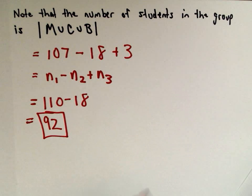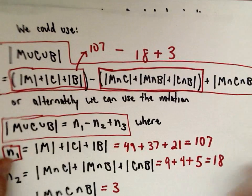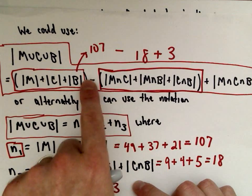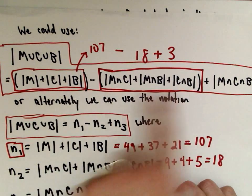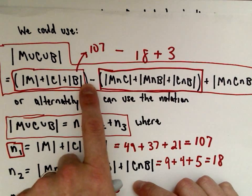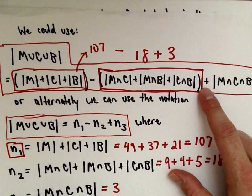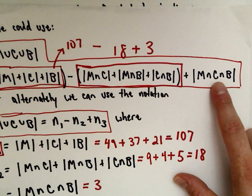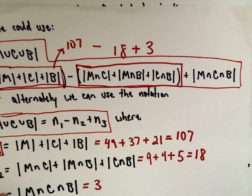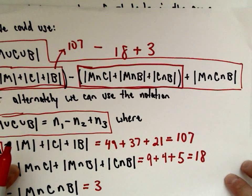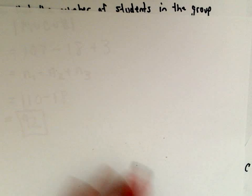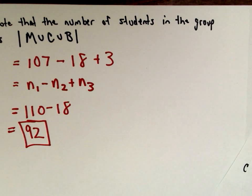We'll look at a four-element scenario in the next example. You do the same thing — look at all four sets individually, then subtract all possible two-set intersections, then add all possible three-element intersections, and finally subtract the intersection of all four sets. There'll be a little more work, but it's the exact same procedure.